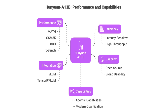Hanyuan A13B demonstrates competitive or superior performance on major benchmarks such as Math, GSM8K, BBH, and TauBench, often outperforming much larger models. Its efficiency makes it well-suited for latency-sensitive environments, and its open-source availability ensures broad usability.